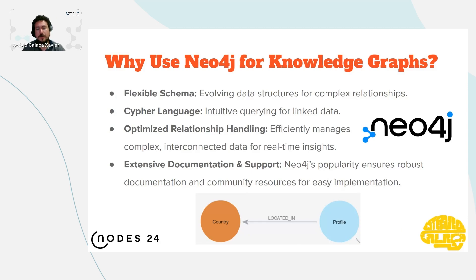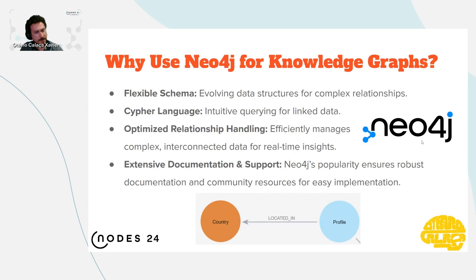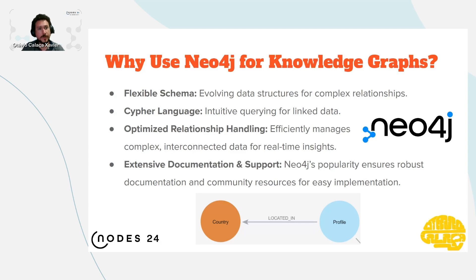A knowledge graph is a graph that has properties in all the nodes and relationships, so we can use a property graph to represent a knowledge graph. Neo4j is exactly the technology we need when talking about property graphs. It has a flexible schema, a really good query language called Cypher, and handles complex relationships with fast querying. It also has great documentation and is well supported by the community — I would say it is the most used graph database.